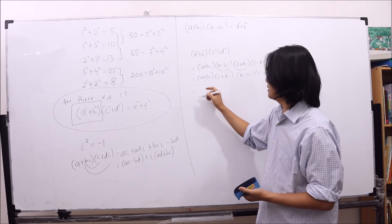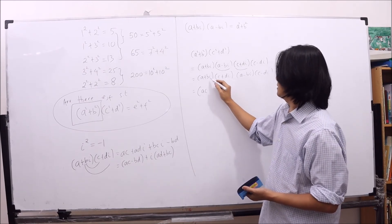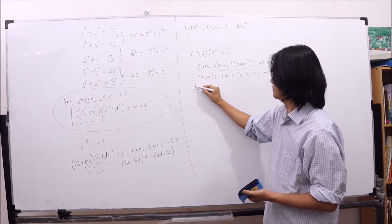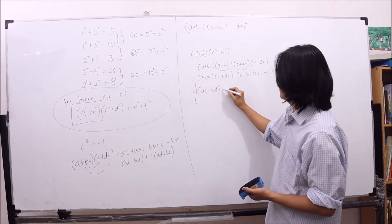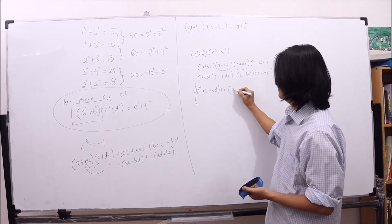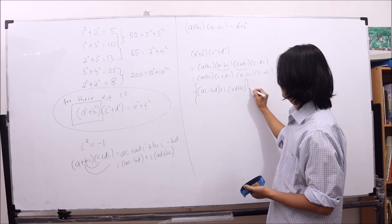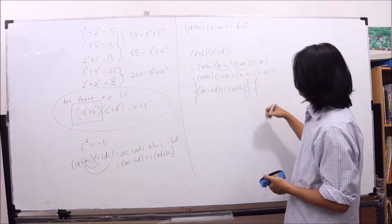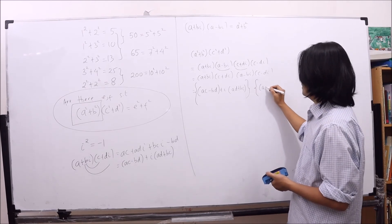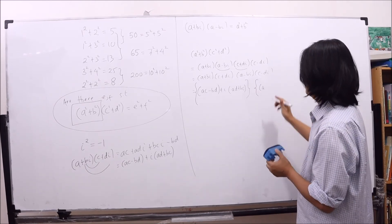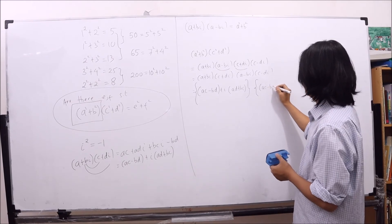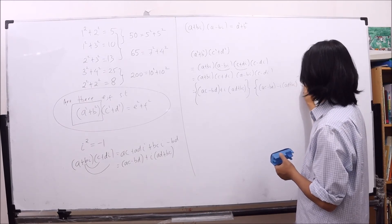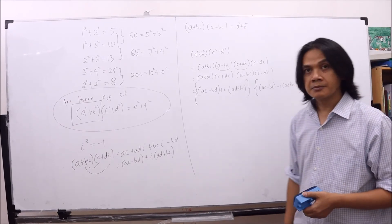So what do we get? a c minus b d, and then the one that contains i is a d plus b c. On the other hand, it will be easy to verify that the result will be a c minus b d minus i, a d plus b c.